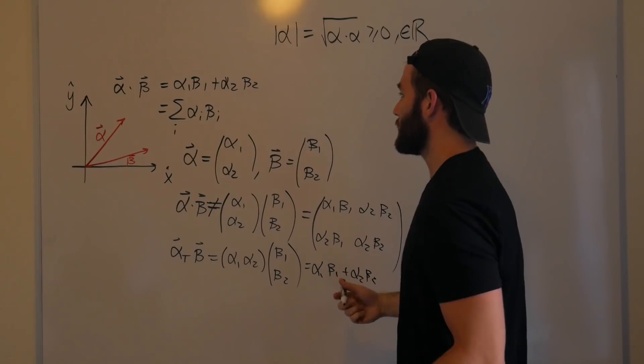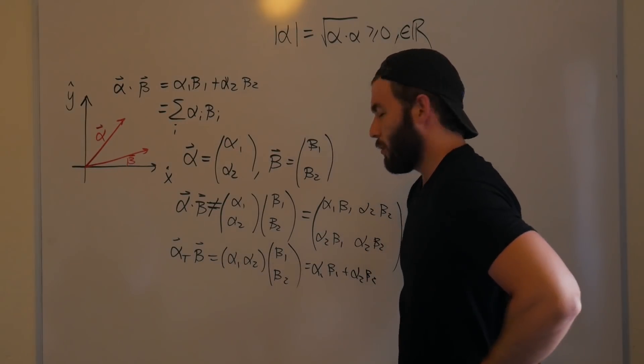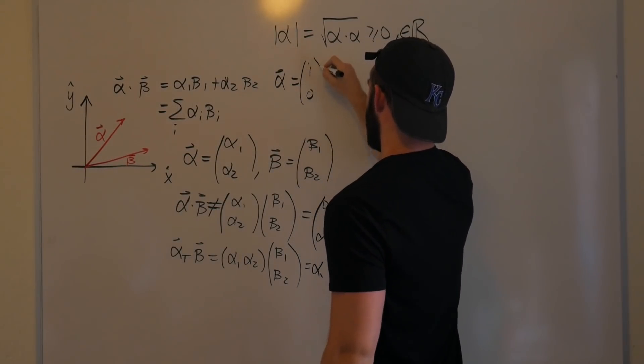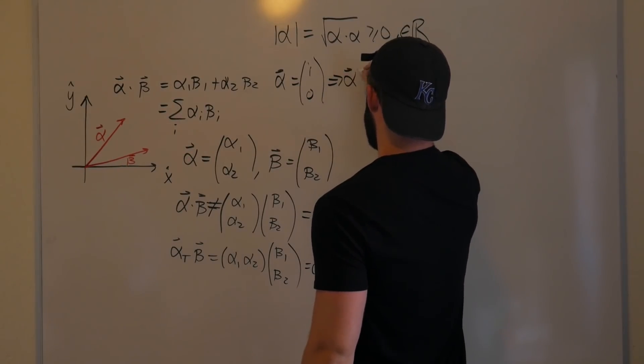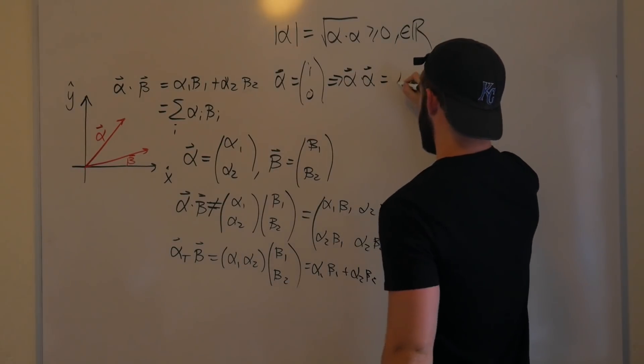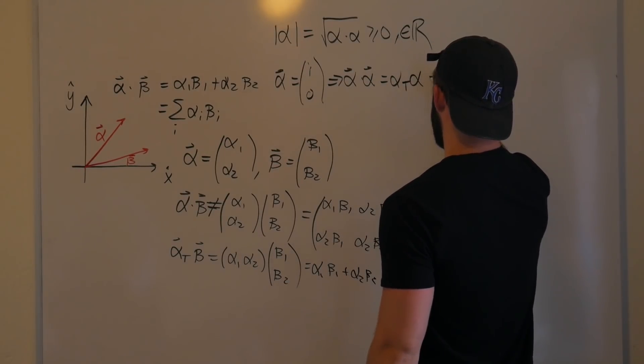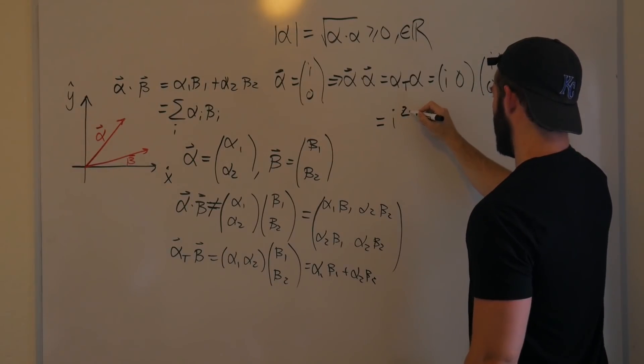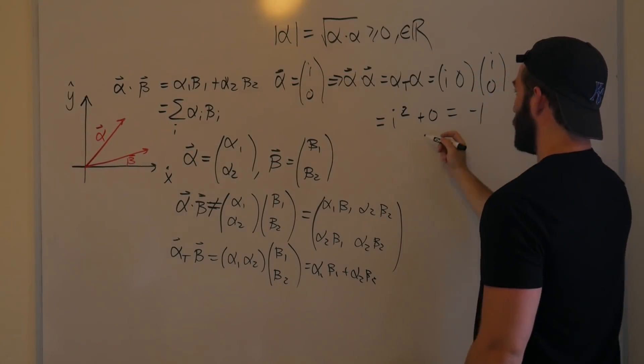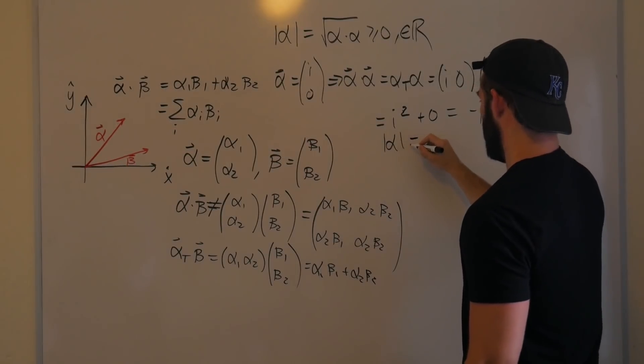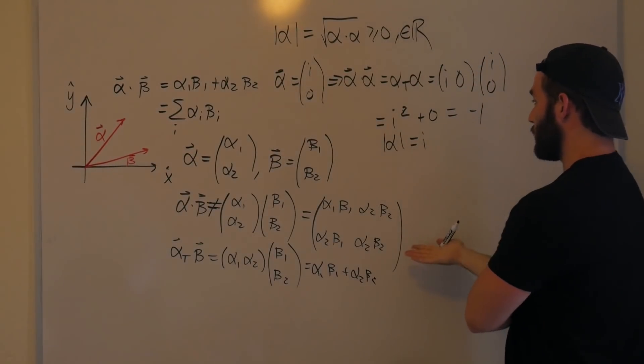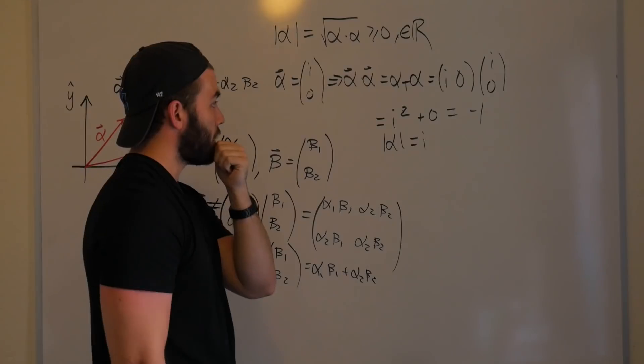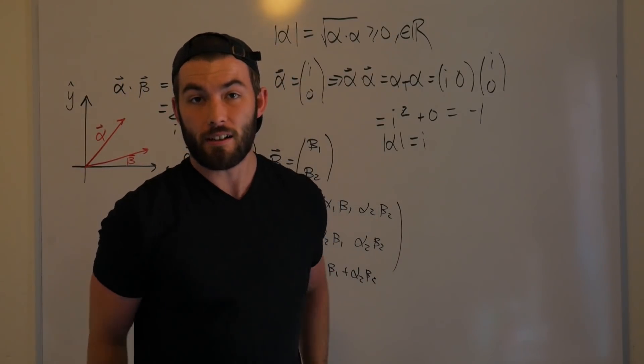So let's introduce some complex vectors and see how tackling the problem this way we run into some trouble. So let's say that alpha is equal to the column vector i, 0. Well then, alpha dot alpha, by using this method, would be alpha transpose alpha, which is i, 0, times i, 0, which is equal to i squared plus zero, which is equal to negative one, which means that the magnitude of alpha here would be imaginary. It would be complex, which is a no-no. So there's something that we're missing. There's something that we need to introduce that preserves this identity here. And in order to do that, we have to introduce the idea of the complex conjugate.